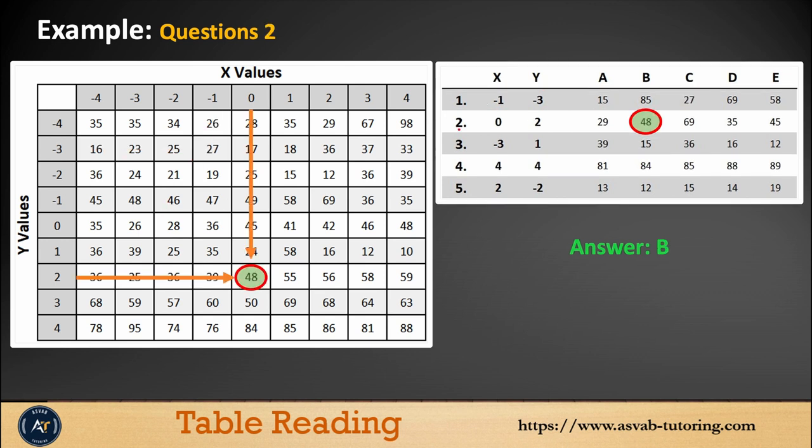Number 2: X axis is 0, Y axis is 2. If you find the X axis at 0 and Y axis at 2, the intersecting point is 48. The correct answer is letter B, 48.